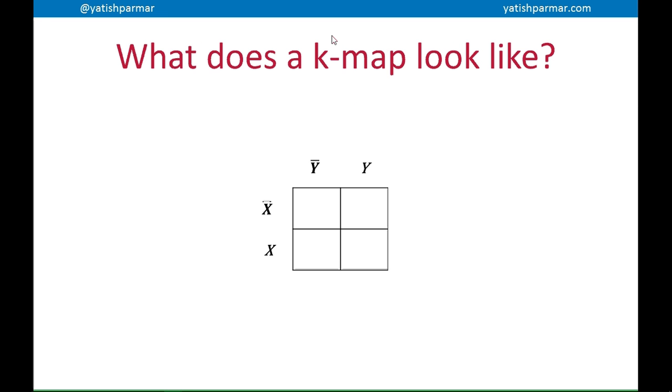The K-map looks something like this. This is for two inputs for a logic circuit. And you basically map out what the outputs of the different conditions would be based on the inputs. So each output is basically represented as a coordinate pair. So for example that arrow is pointing to the coordinate pair of the inversion of x and y, so not x and y.